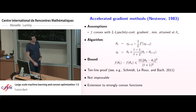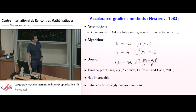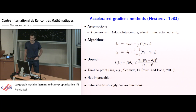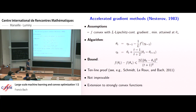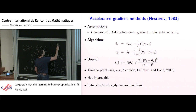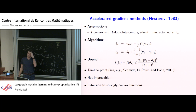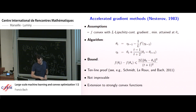For strongly convex functions, acceleration replaces the contraction factor (1 - μ/L) with (1 - √(μ/L)), which is also what you get from conjugate gradient.